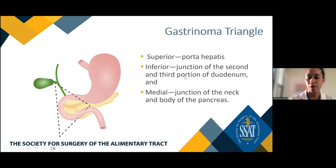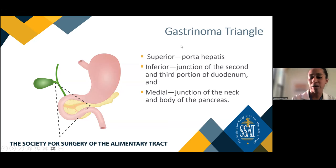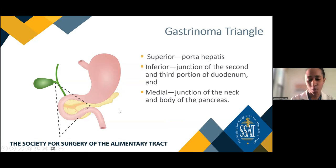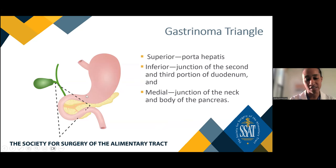The gastrinoma triangle — where the majority of gastrinomas are found — is bordered by the porta hepatis, the second and third portion of the duodenum, and the junction of the neck and body of the pancreas.